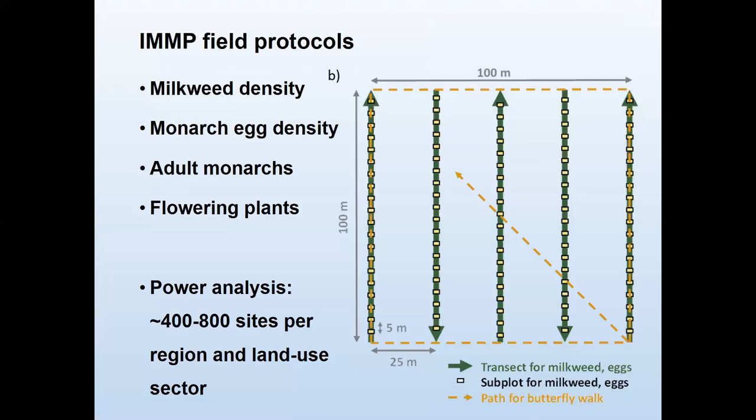Since we're looking for information on what conservation actions we can take, the actions you can take on a roadside are different than those in a protected grassland versus private land like a cornfield. We've stratified our area of interest into six land use sectors. For today I'm focusing on unprotected grasslands because that's where we have the most pilot data to help inform the analysis.